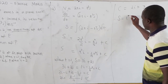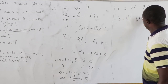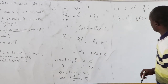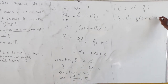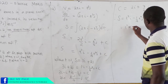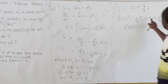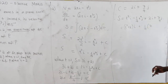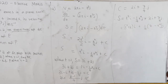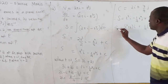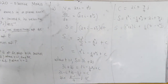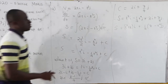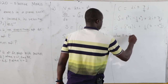Hence our displacement is t²i minus (1/4)t⁴j plus our constant of integration 2i plus (7/4)j. Grouping terms, we get (t² + 2)i plus (7/4 minus (1/4)t⁴)j. This is our displacement expression.